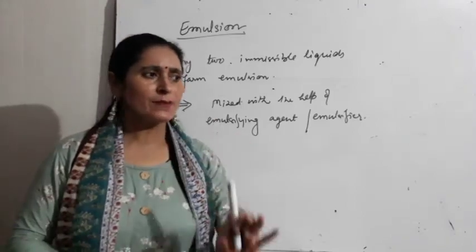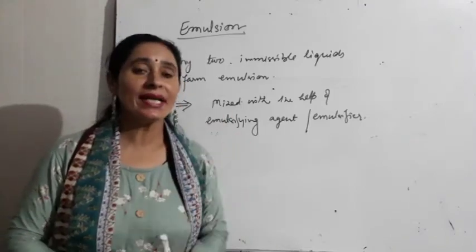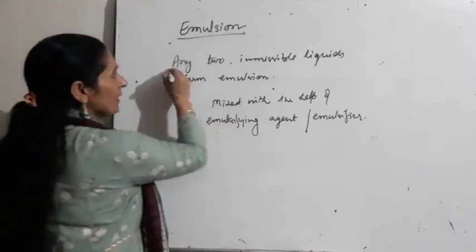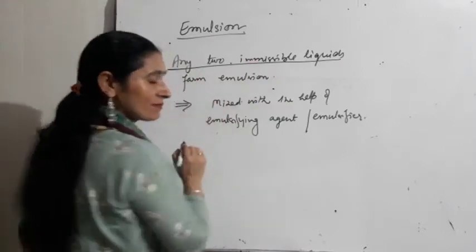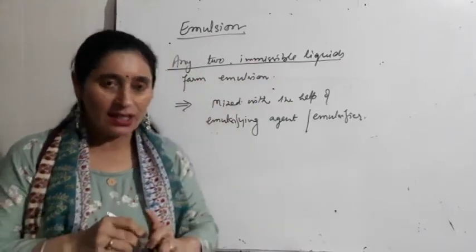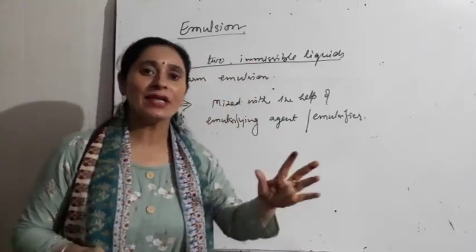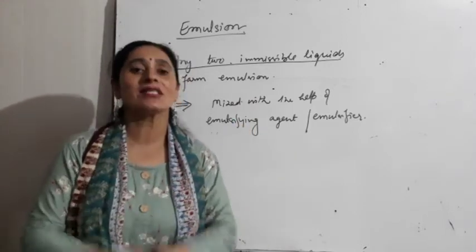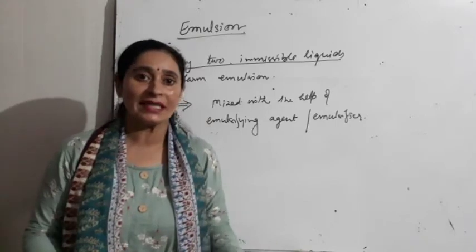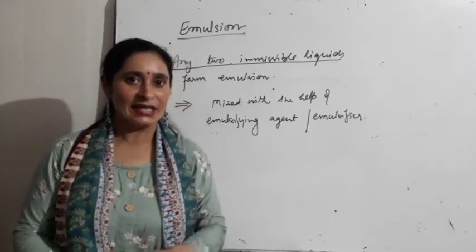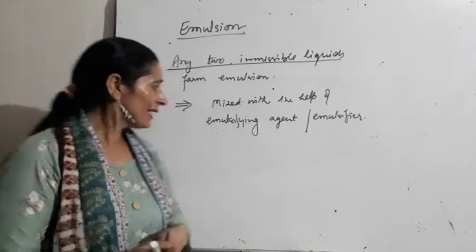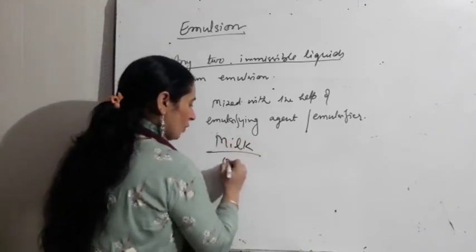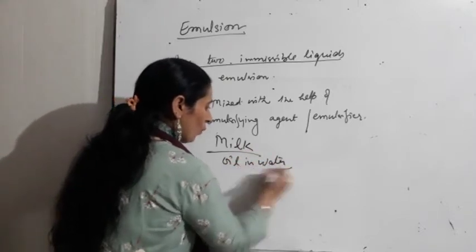Emulsion ki sabse important quality ye hai: it is formed when any two immiscible liquids are mixed. Matlab, dispersed phase bhi liquid aur dispersion medium bhi liquid, lekin ye dono liquids normal conditions mein aapas mein mix nahi hote — wahi emulsion banayenge. Jaise oil and water — milk is the best example of oil-in-water emulsion.